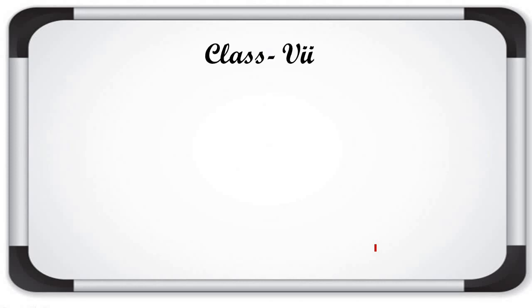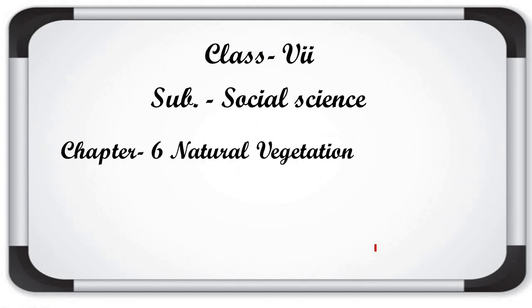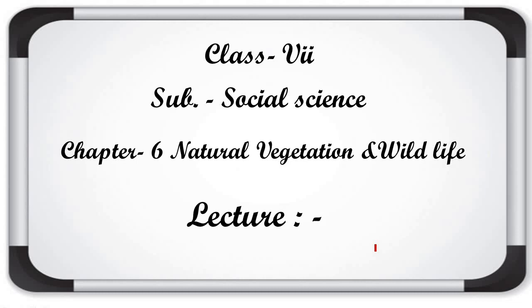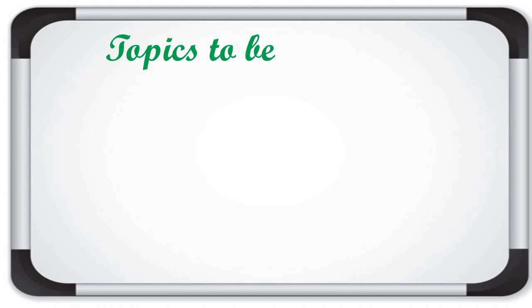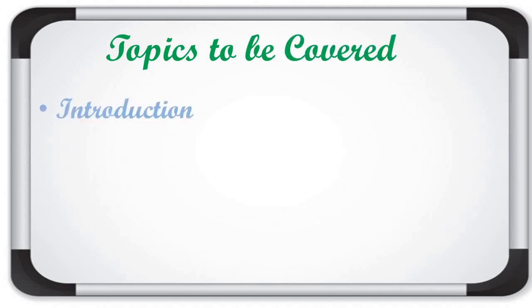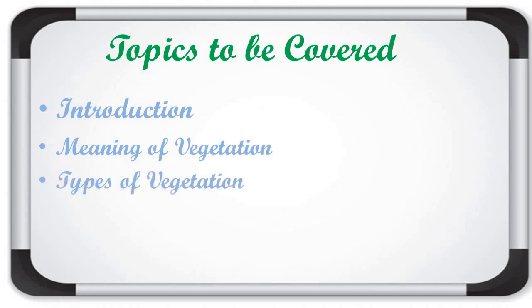Good morning students, welcome back. I hope all of you are healthy and fit at home. This video is for the students of Class 7th, subject Social Science. Today we are going to start Geography Chapter 6: Natural Vegetation and Wildlife. It is the first lecture of this chapter and today we are going to cover: introduction, meaning of vegetation, types of vegetation, and a homework assignment.